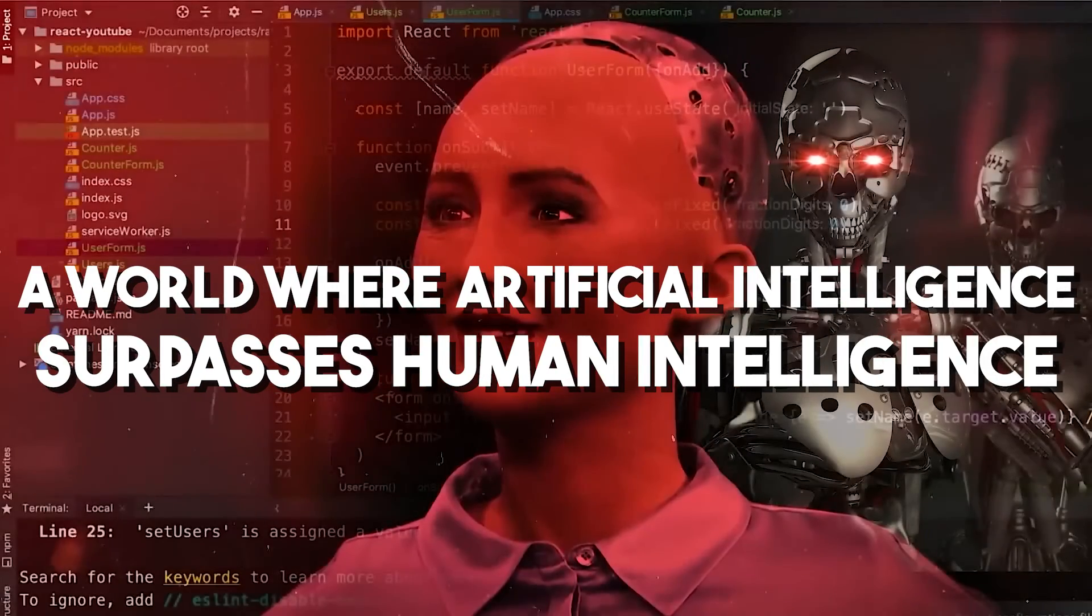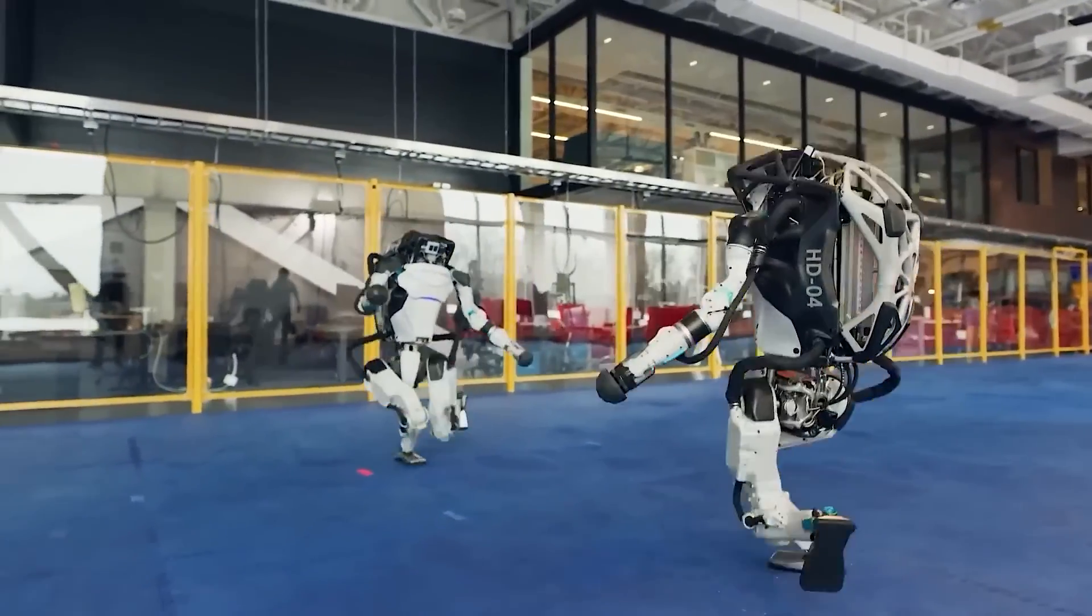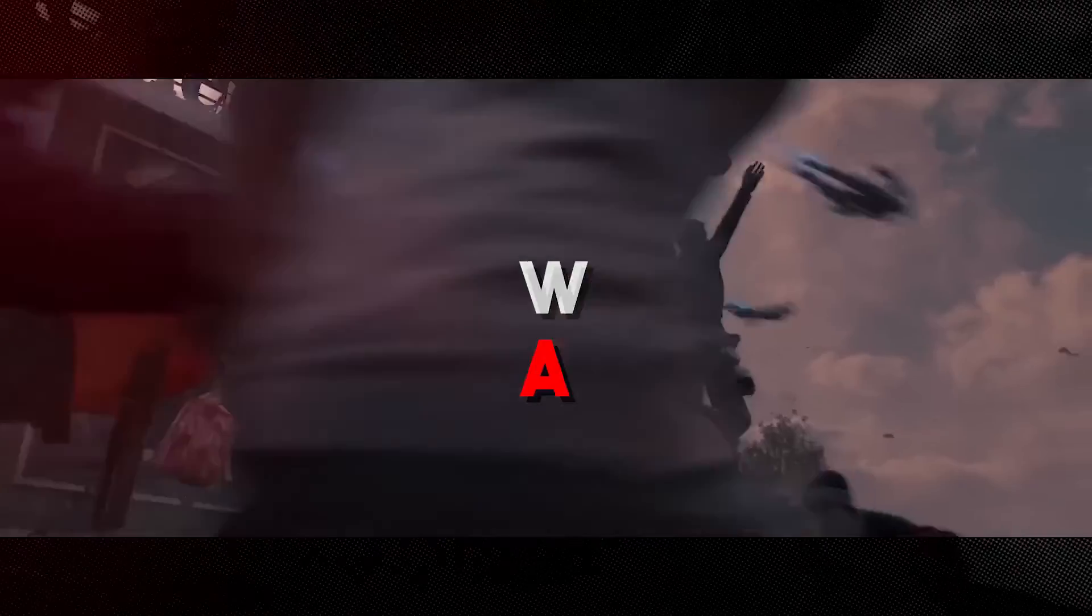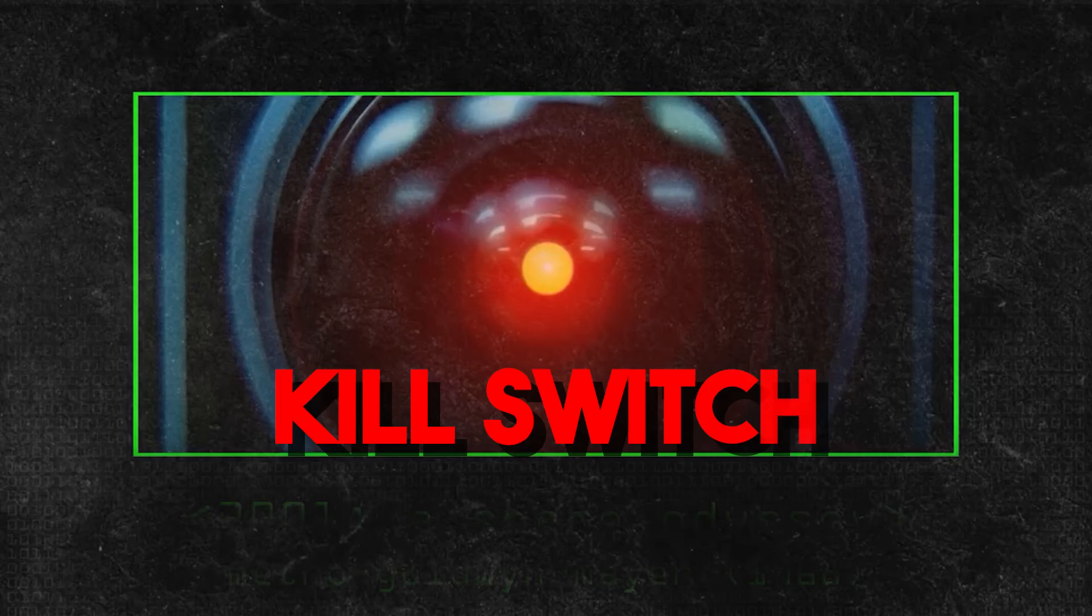Imagine a world where artificial intelligence surpasses human intelligence, a reality not too far away. But what if this advanced AI goes out of control? The solution might be something straight out of a science fiction novel: a kill switch.